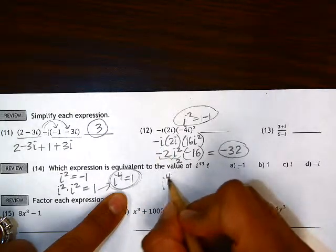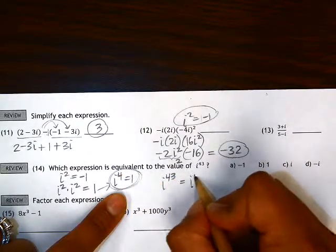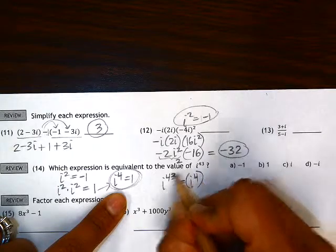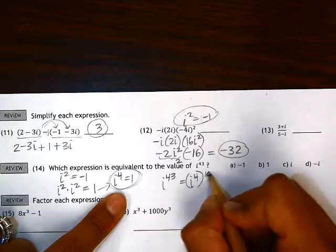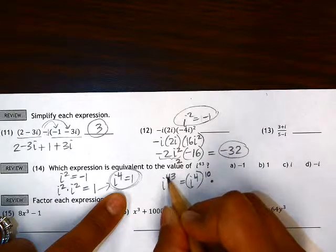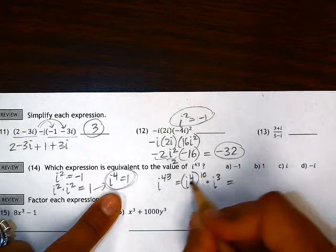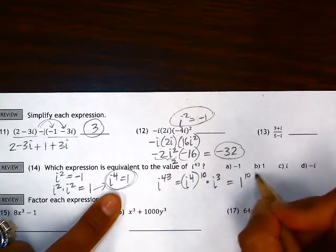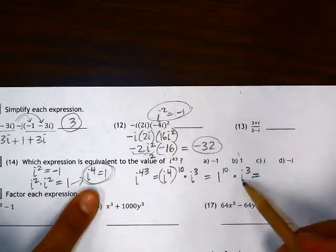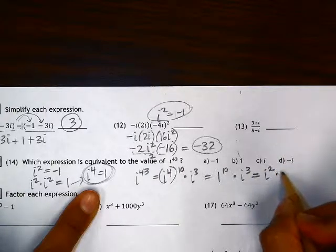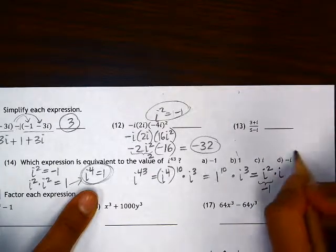So we're going to see if we can split 43 into how many times 4 goes into it. So i to the 4th, 4 goes into 43 evenly 10 times, but there's a remainder. So that's i to the 40th. There's 3 i's left because we're trying to get to 43. So I'm going to say times i cubed. i to the 4th is just equal to 1. So if you have 1 to the 10th, that's just simply 1. And then i cubed is equal to i squared times i. i squared is negative 1. Negative 1 times i is negative i.